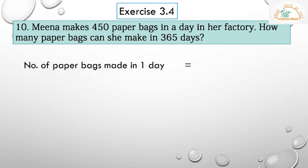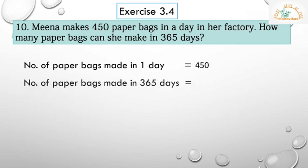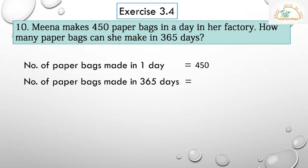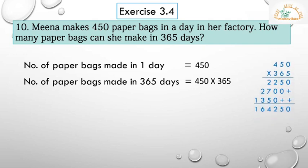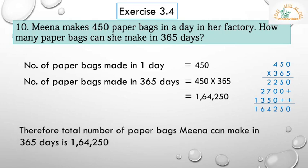Here is the solution. Number of paper bags made in one day is equal to 450. Number of paper bags made in 365 days is equal to 450 multiplied by 365, which gives 1,64,250. Therefore, the total number of paper bags Minna can make in 365 days is 1,64,250. Students, please copy all these problems in your notebook. Thank you, have a nice day.